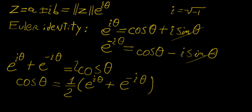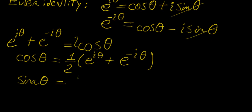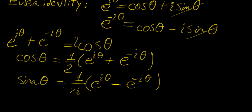In a similar manner, if you subtract one from the other — subtracting e to the minus i theta from e to the i theta — the sine terms become positive and add together, whereas the cosines cancel. So sine of theta can also be expressed in terms of complex exponentials. The only difference is that it has an i in the denominator and uses a minus sign, giving the expression involving e to the i theta minus e to the minus i theta over 2i.